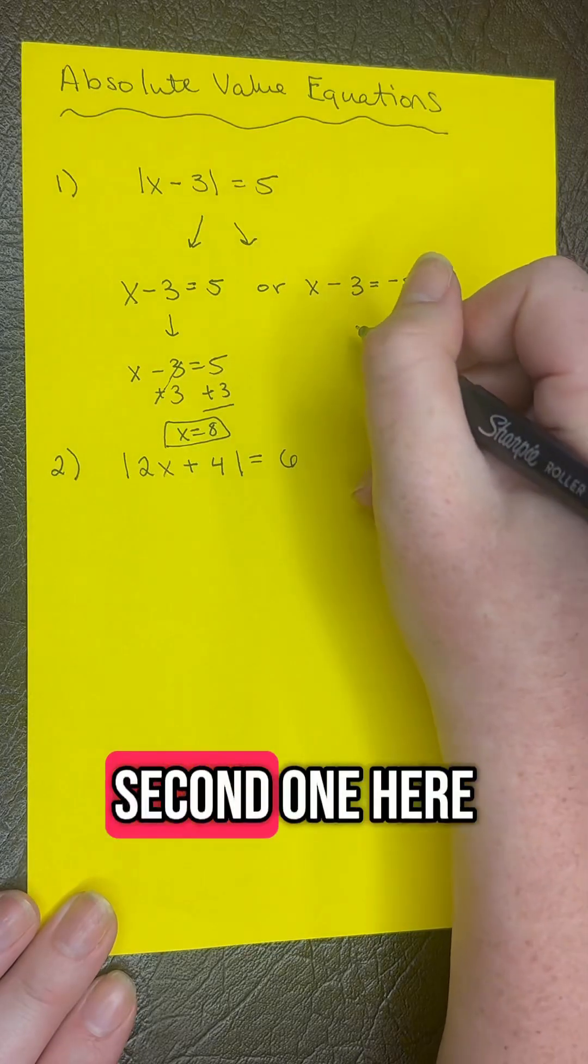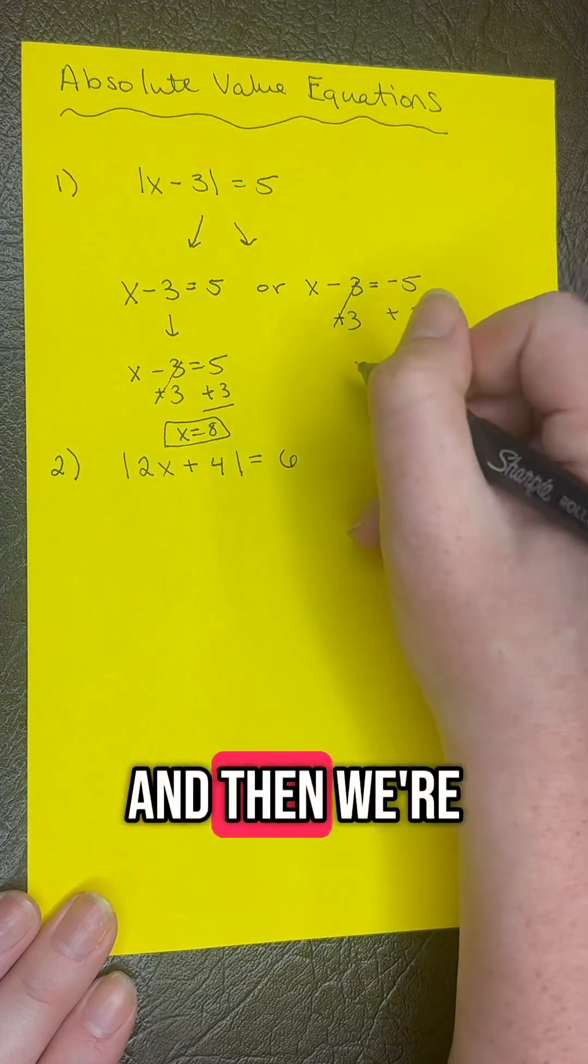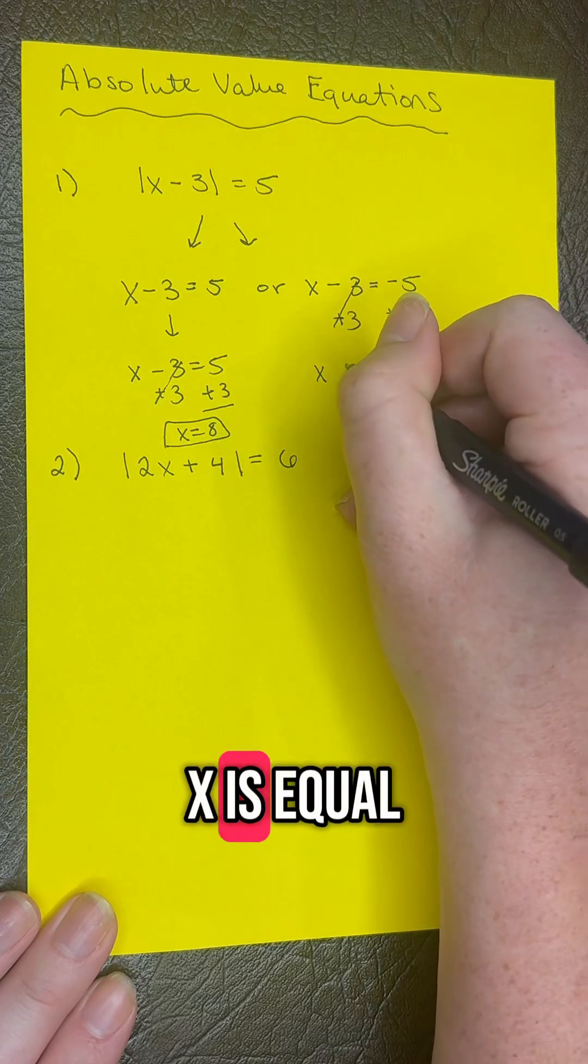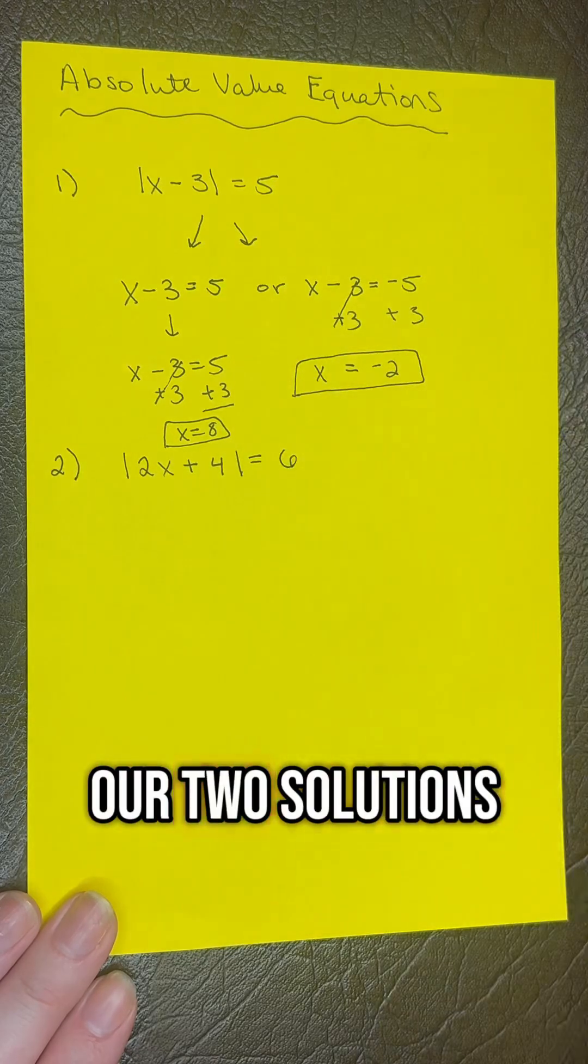For the second case, we're going to add 3 to both sides again, and then we get x equals negative 2. So these are our two solutions.